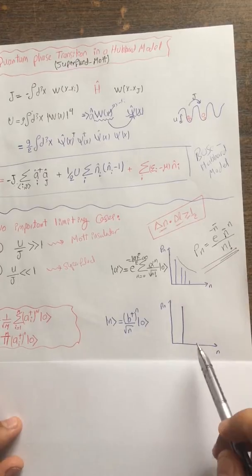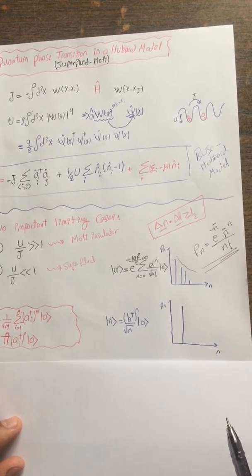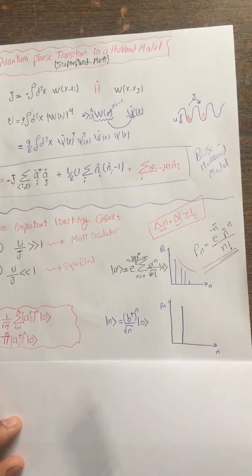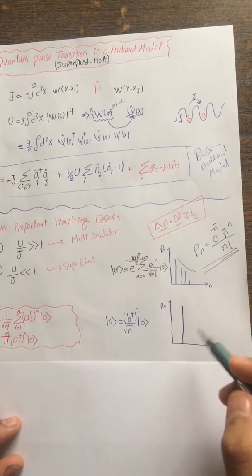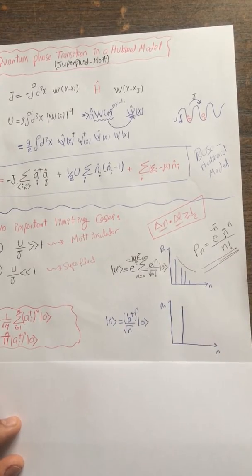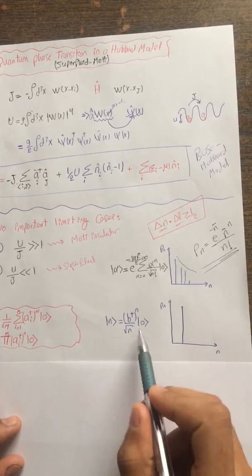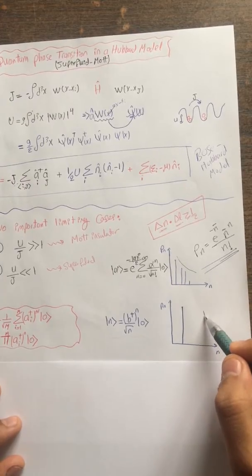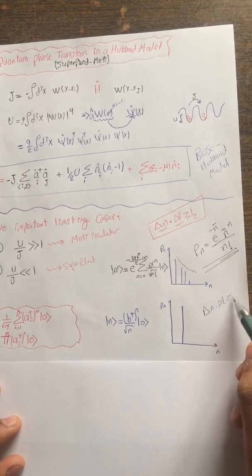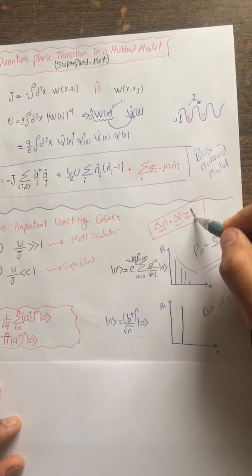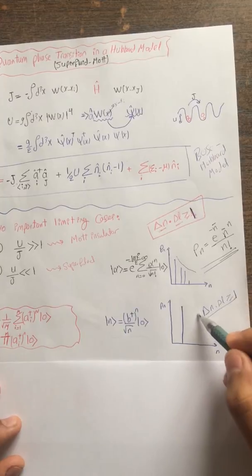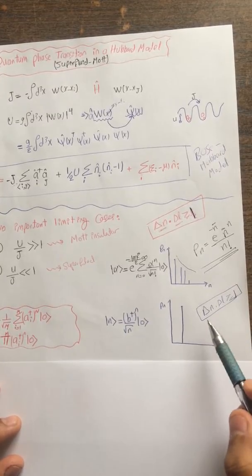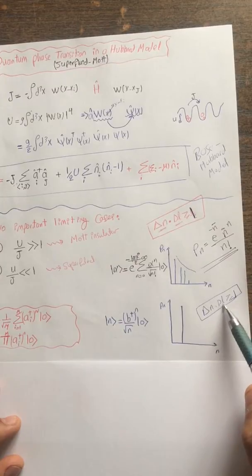For the Mott insulator case, the coherence vanishes — there is no phase coherence — whereas for the superfluid we see long-range phase coherence. For the Fock state representation of the Mott insulator, you just have one simple Fock state, created by applying creation operators to the vacuum. The Mott insulator phase is characterized by delta n times delta phi greater than or equal to one.